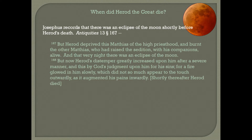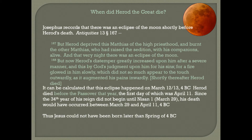When did Herod the Great die? Josephus records an eclipse of the moon shortly before Herod's death. This eclipse can be calculated to have happened on the night of March 12–13 in 4 BC. Herod died before the Passover that year, which fell on April 11. Since the 34th year of his reign didn't begin until Nisan the first — March 29 — his death would have occurred between March 29 and April 11, 4 BC.